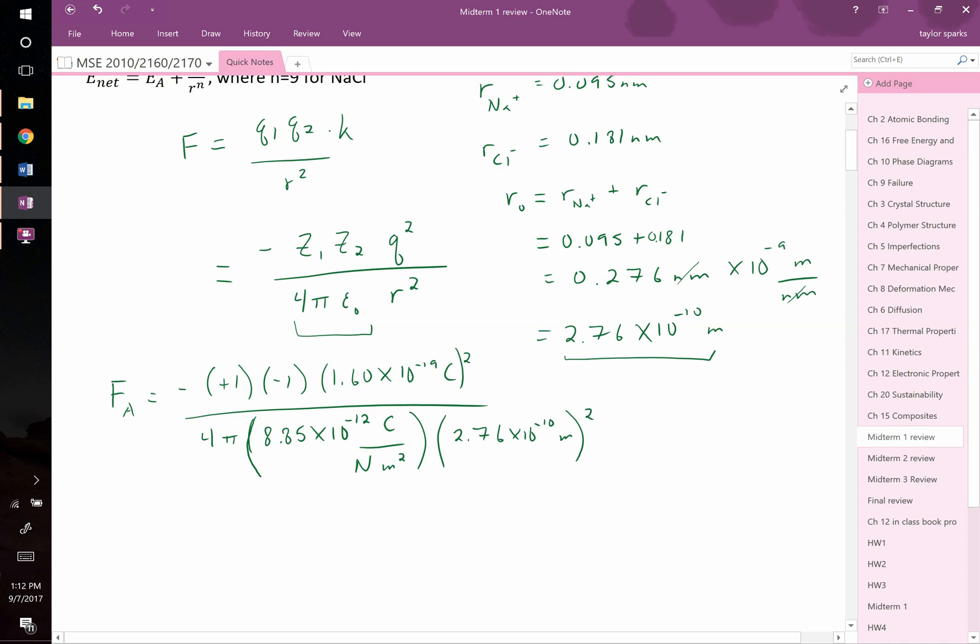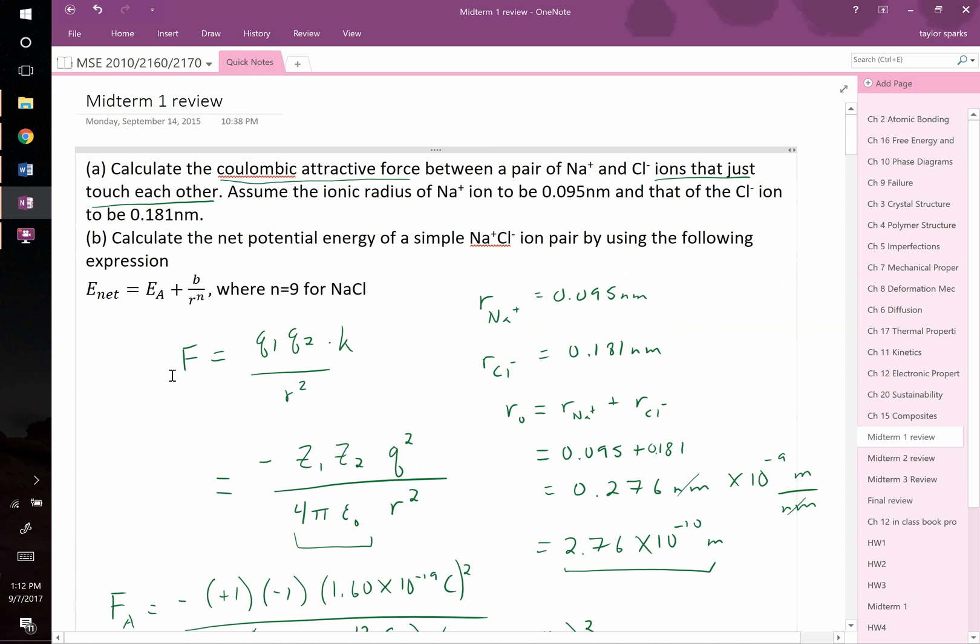Plugging all those values in, I find that we reach an attractive force of positive 3.02 times 10 to the negative 9 newtons. So that's our attractive force. This question asked us to calculate the Coulombic attractive force, so we're done with part A. Now we can go ahead and move on to part B.